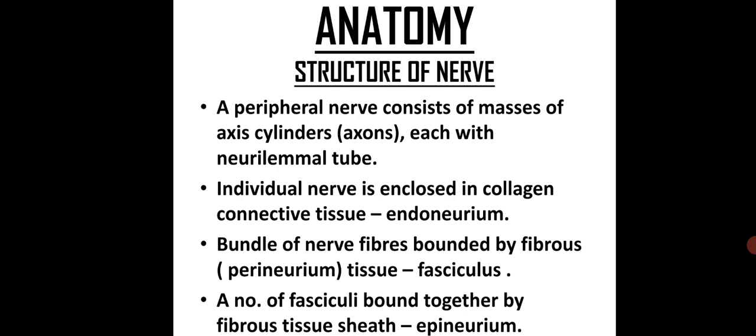Anatomy: structure of the nerve. A peripheral nerve consists of masses of axons, each with a neurolemmal tube. The individual nerve fiber is enclosed in a collagen connective tissue known as endoneurium. A bundle of nerve fibers bonded by fibrous tissue forms a fasciculus, with the binding fibrous tissue known as perineurium. A number of fasciculi bound together by a fibrous sheath is known as epineurium.